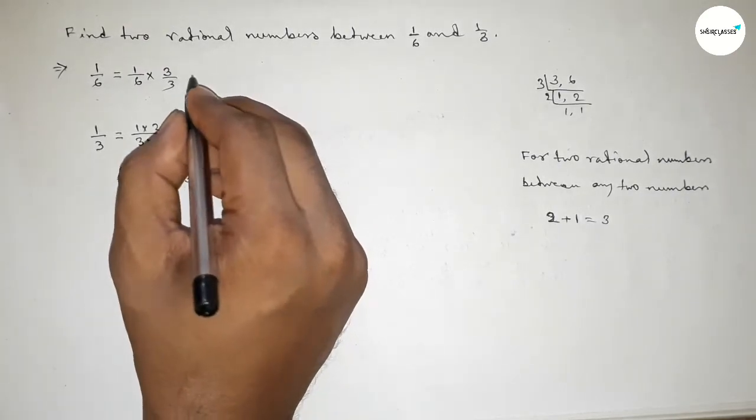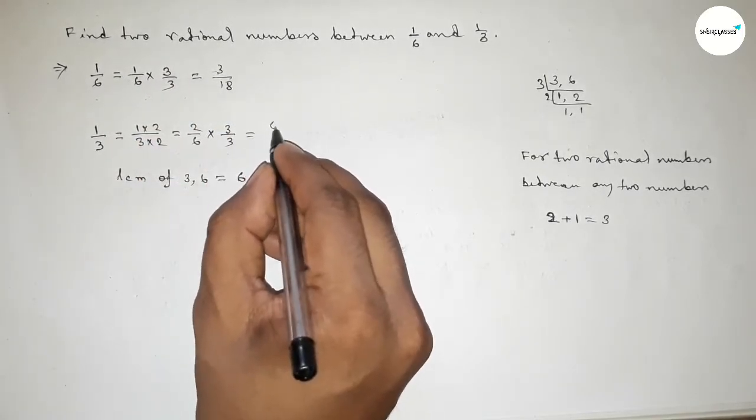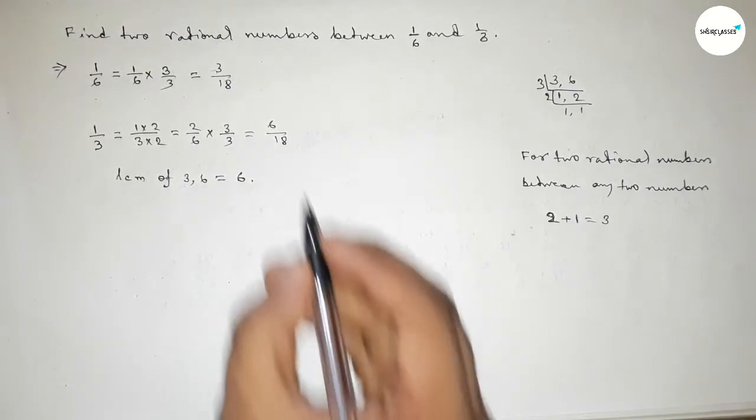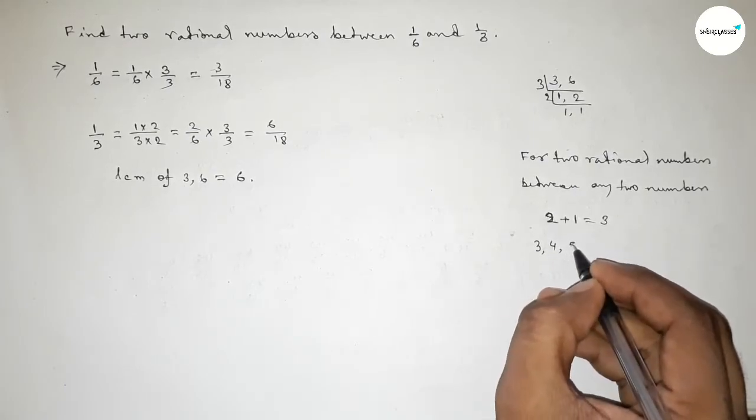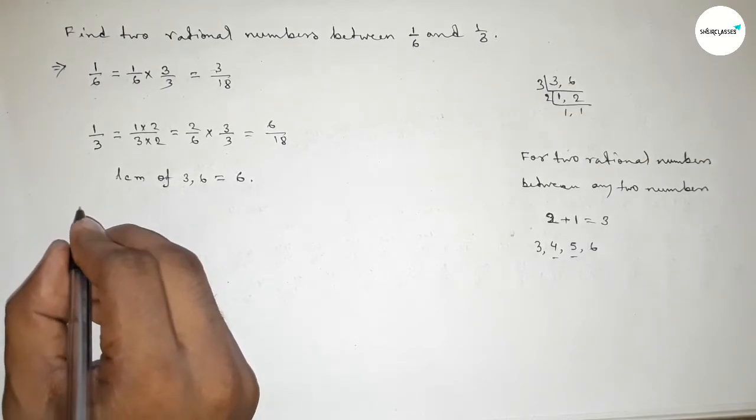So this is equal to 3 over 18 and here this is equal to 6 over 18. Now between 3 to 6 we can get two natural numbers, and these are the two natural numbers.